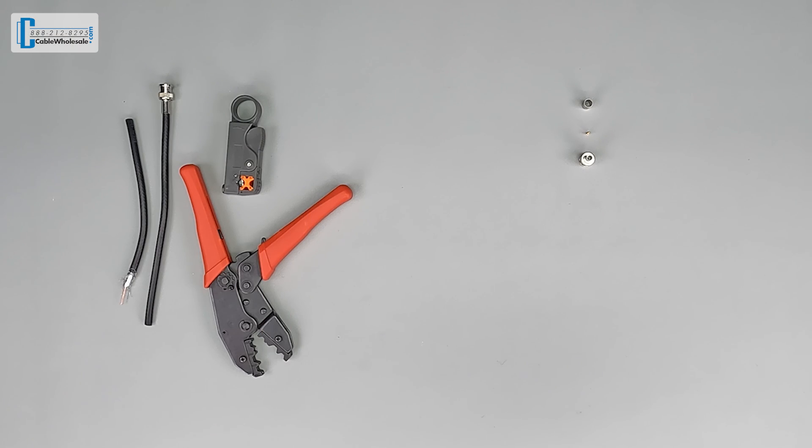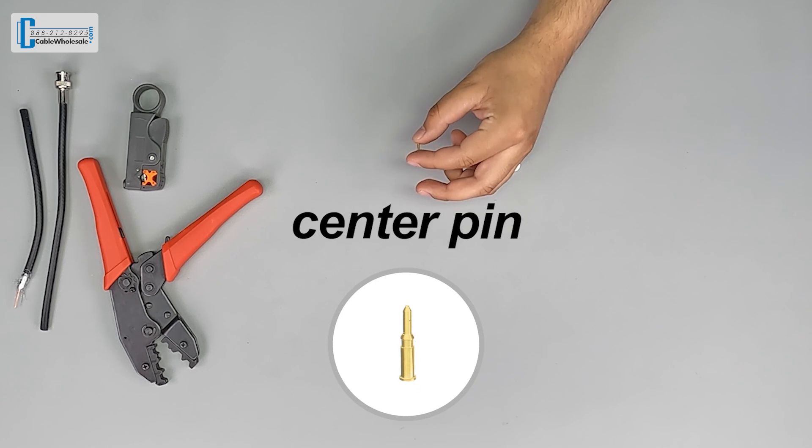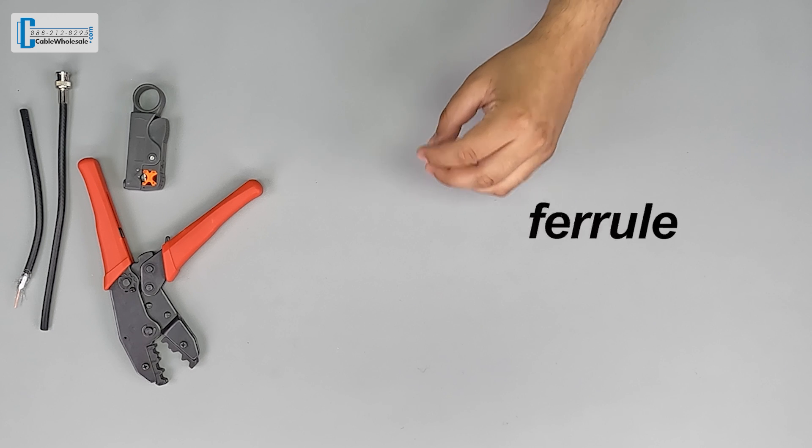All the parts used in today's video will be in the video description. So let me go ahead and show you the parts of the BNC connector. First, you have the connector body, the center pin, and the ferrule.